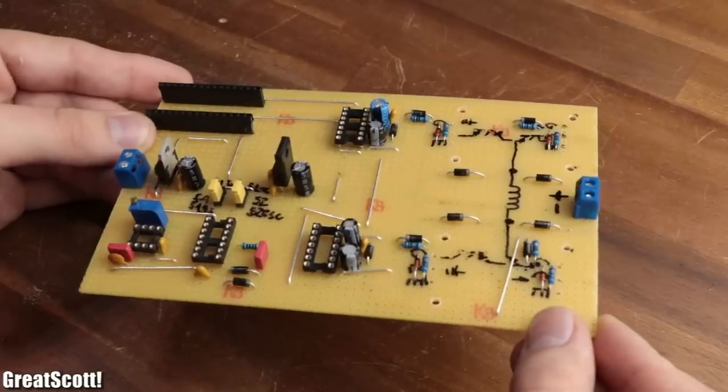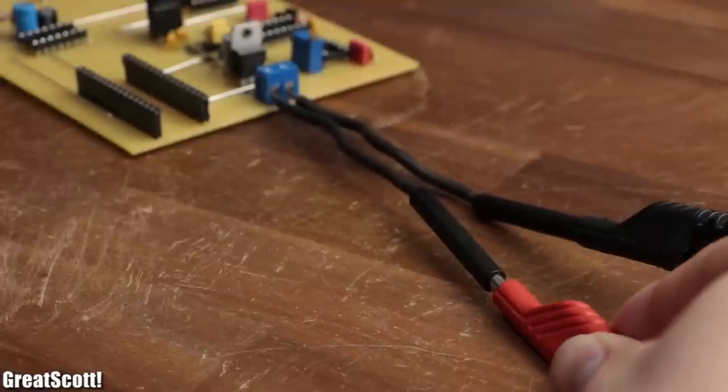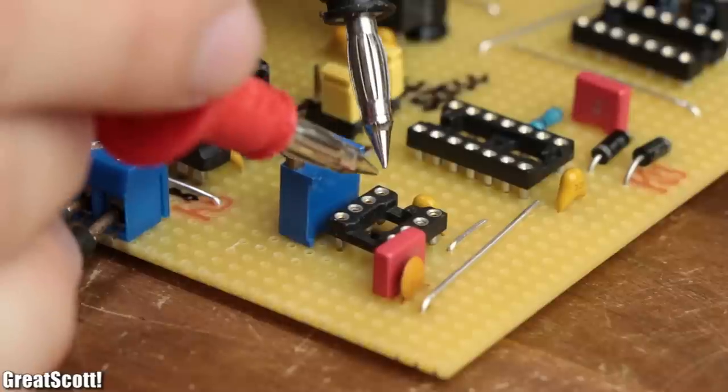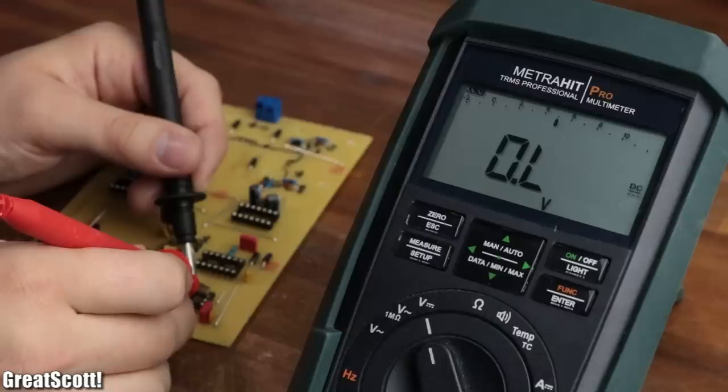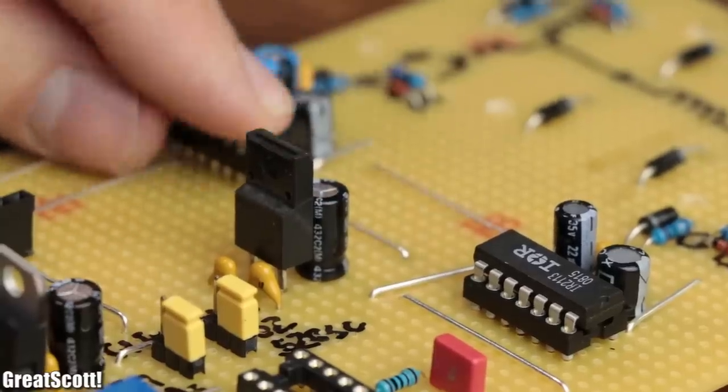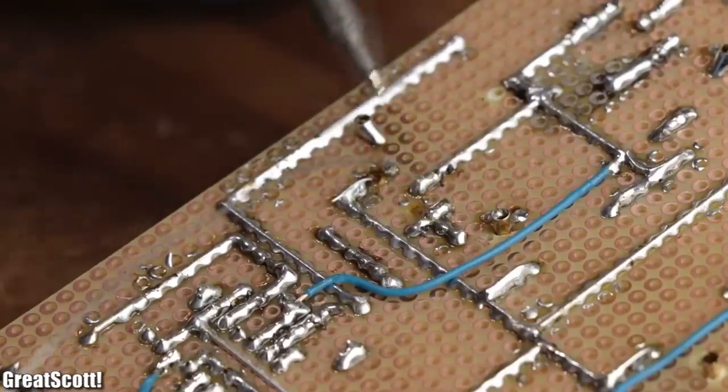After around 5 hours, the circuit was complete, and it was time to connect the control circuit to a 15 volt power source. Once I was sure that all the voltages at the IC sockets were correct, I inserted the ICs, pushed the IGBTs with heatsink in their rightful place, and connected them to the circuit.